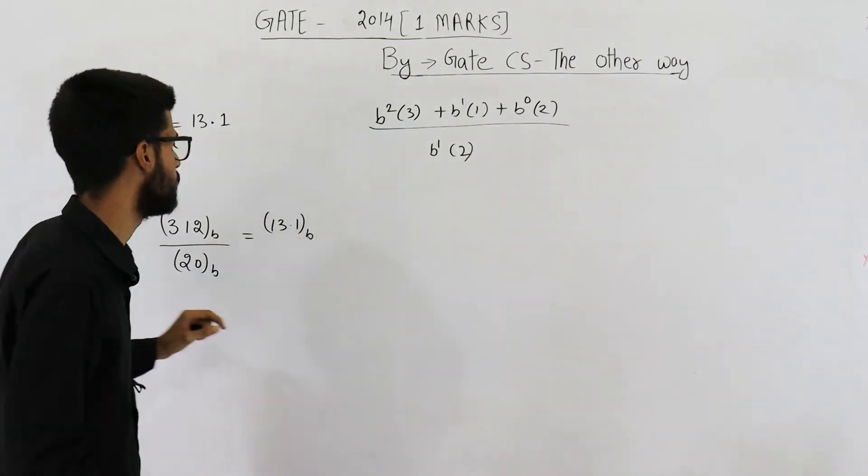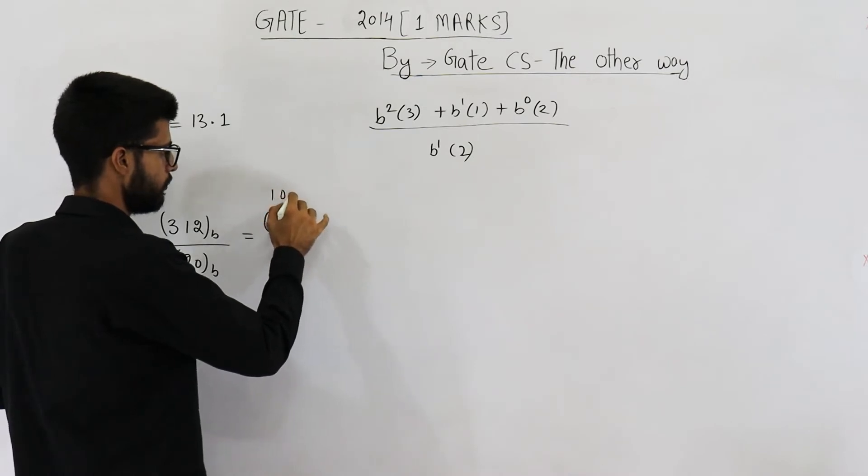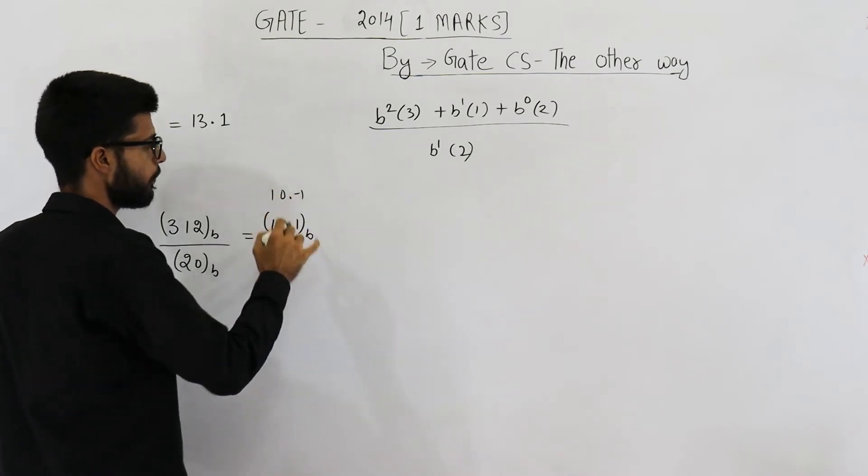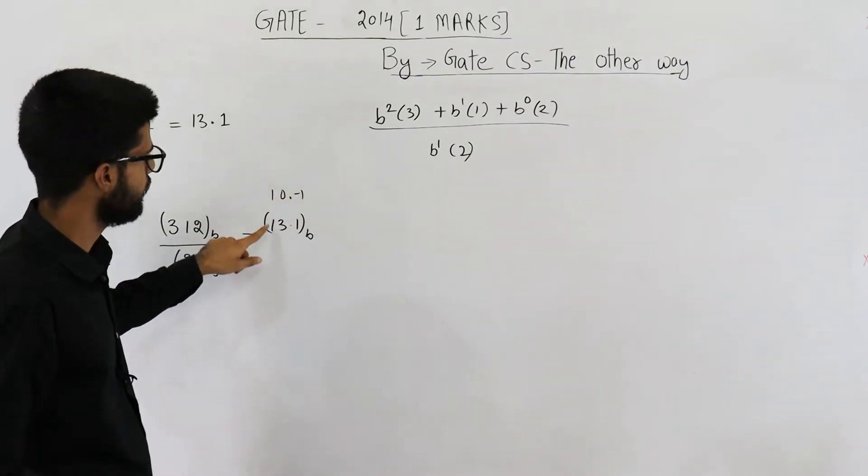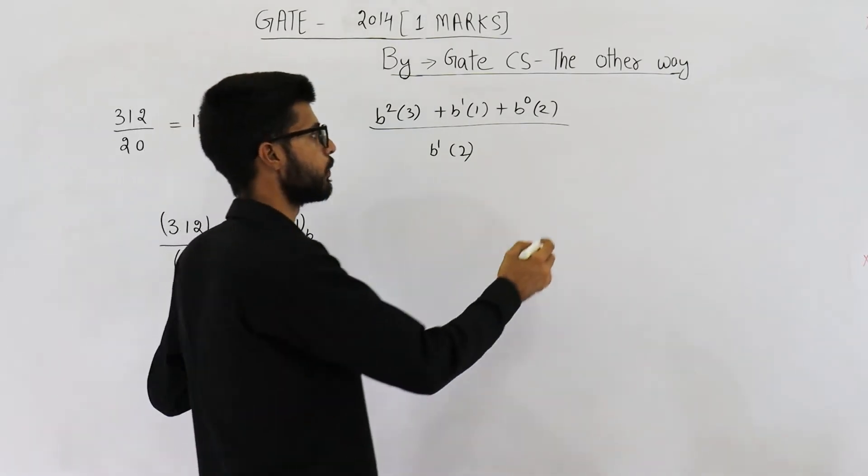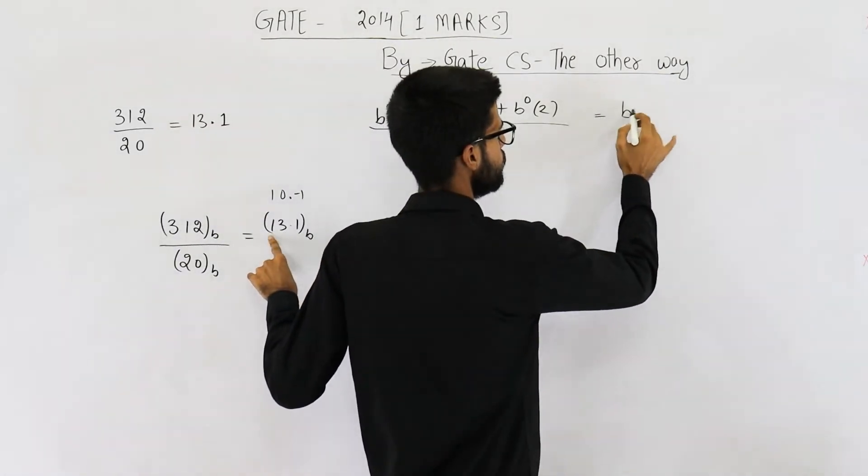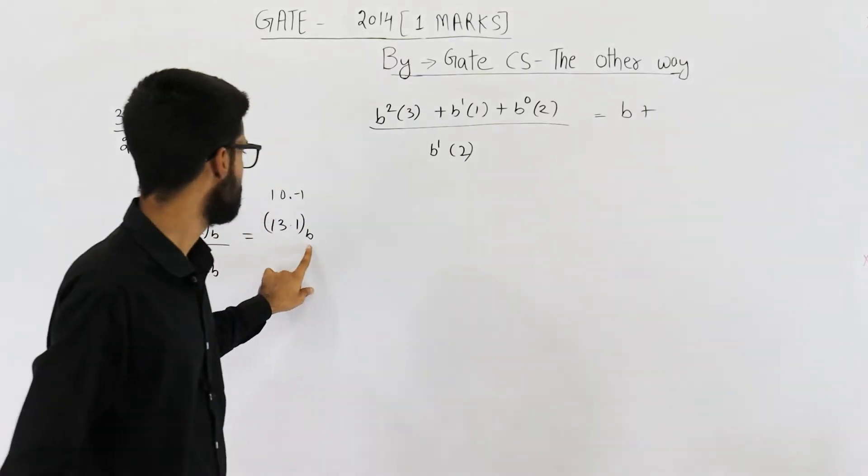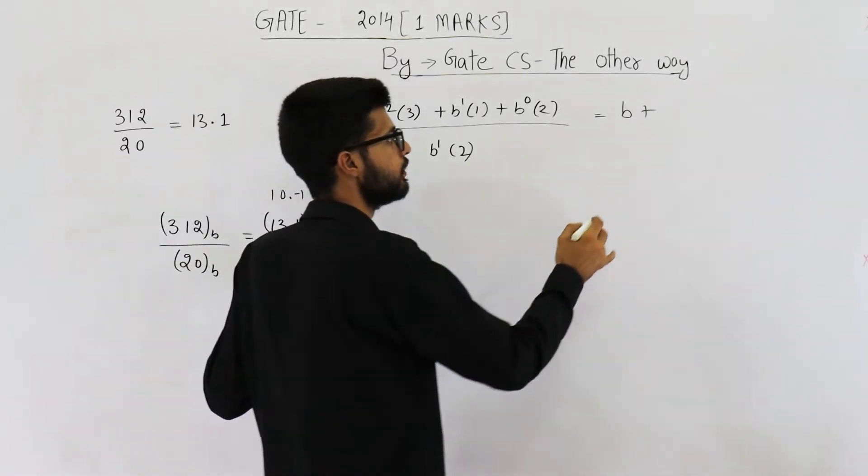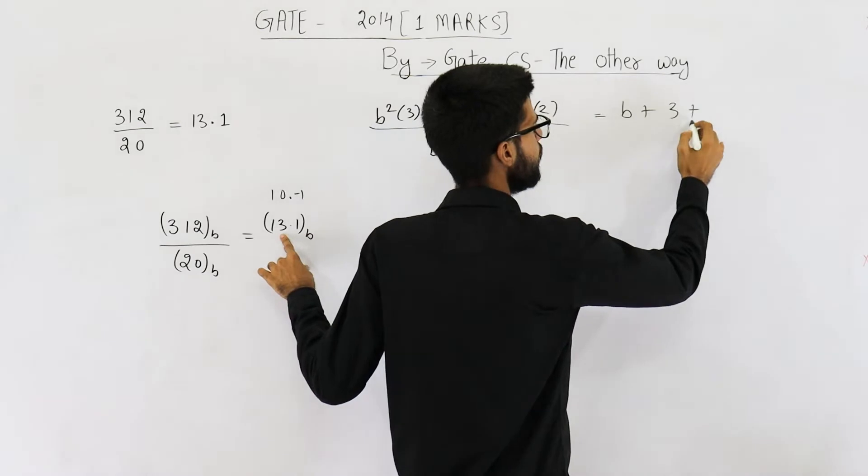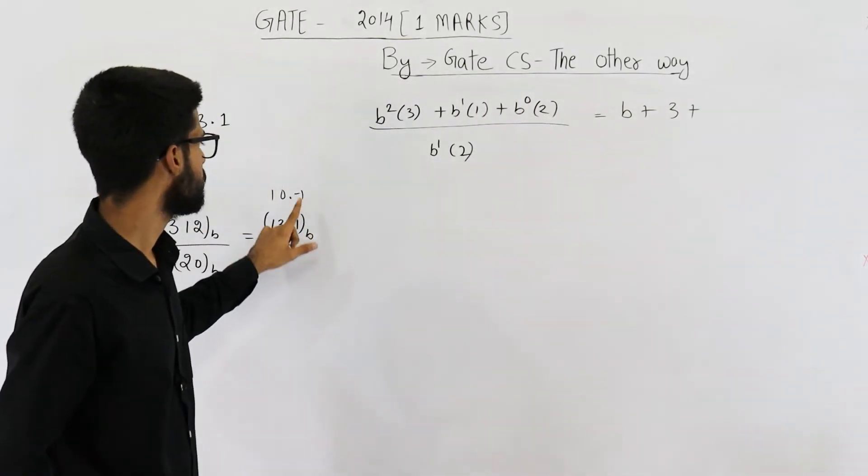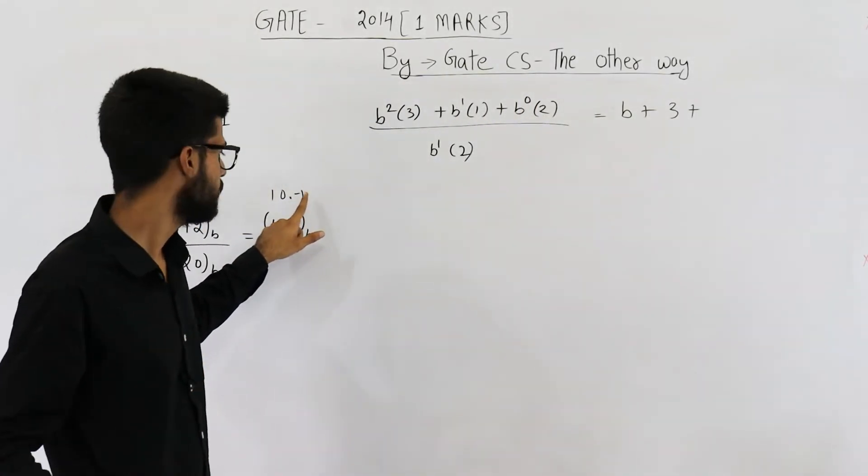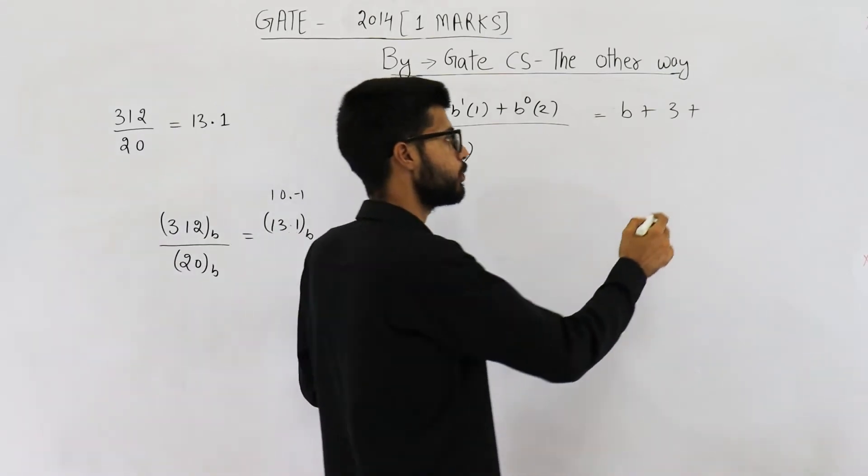This number will be 13.1. b power 1 into 1, it will be b only. Plus b power 0 into 3 that means it is 3. Plus b power minus 1 that means 1 by b into 1. So this is 1 by b only.